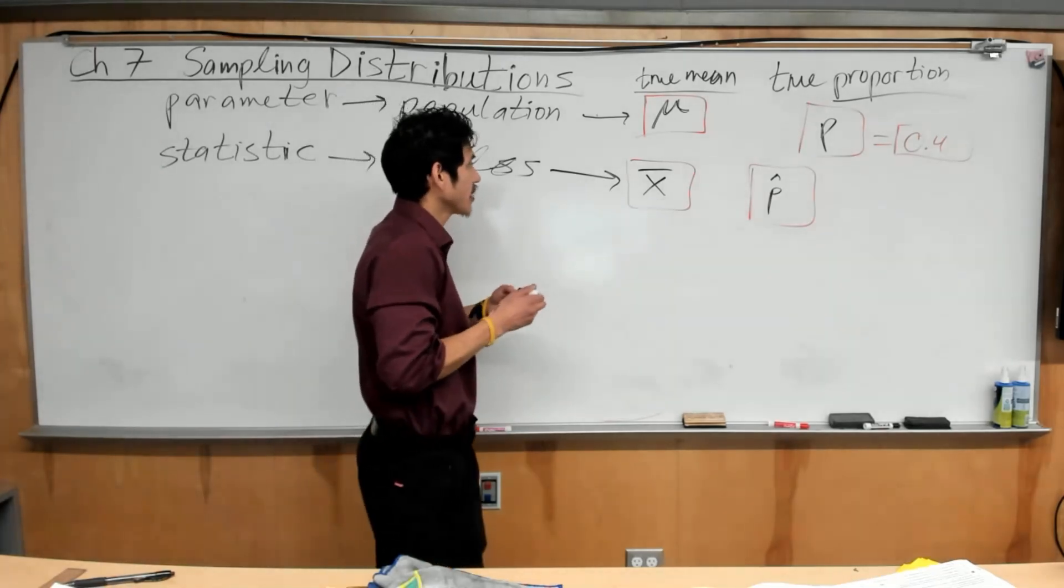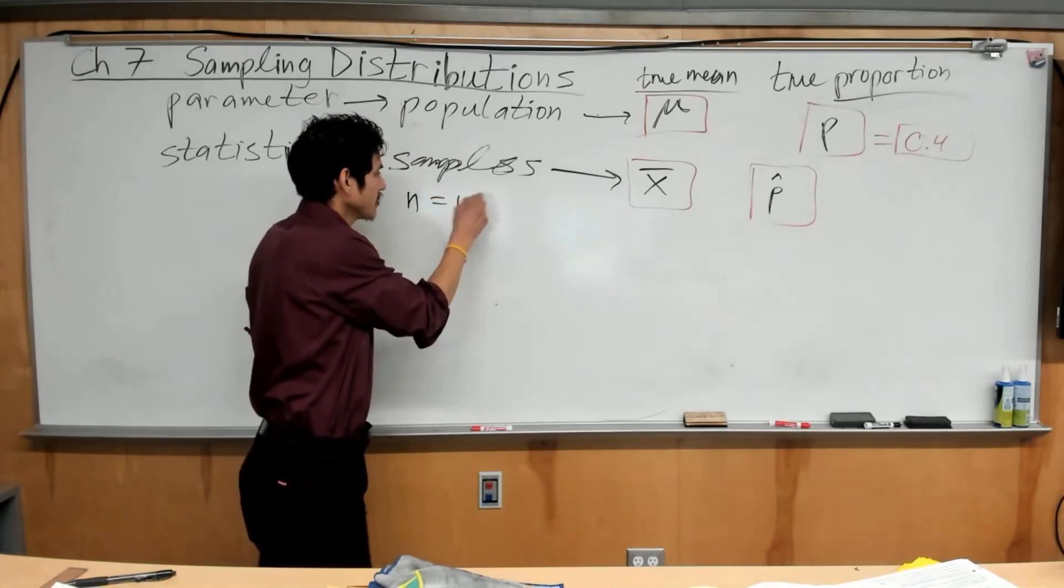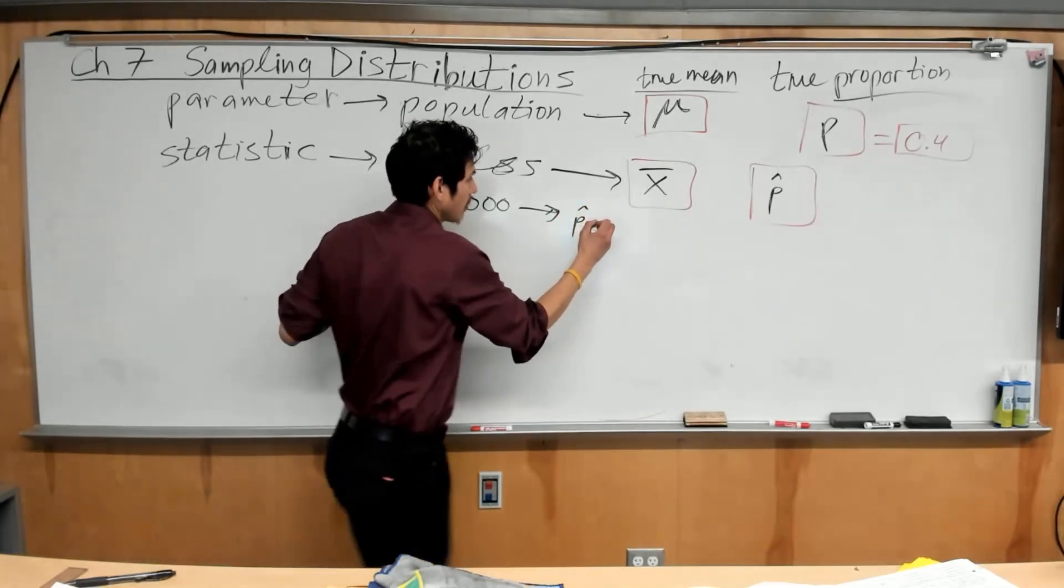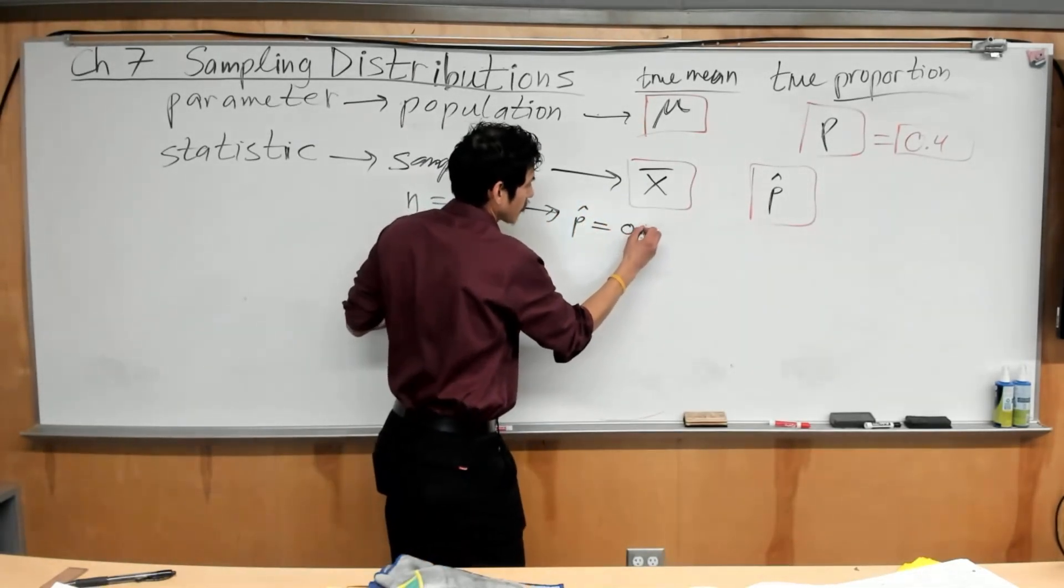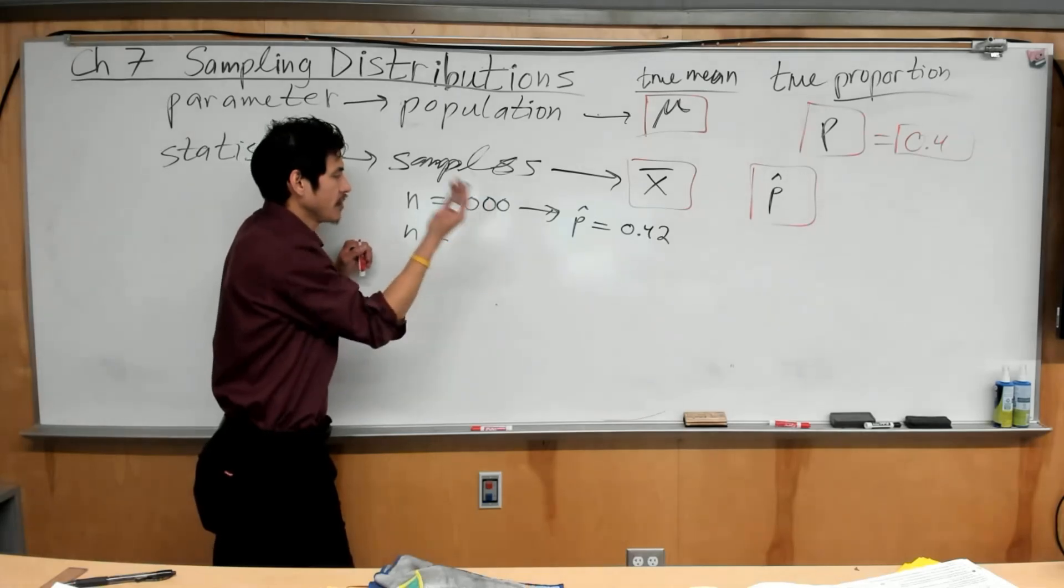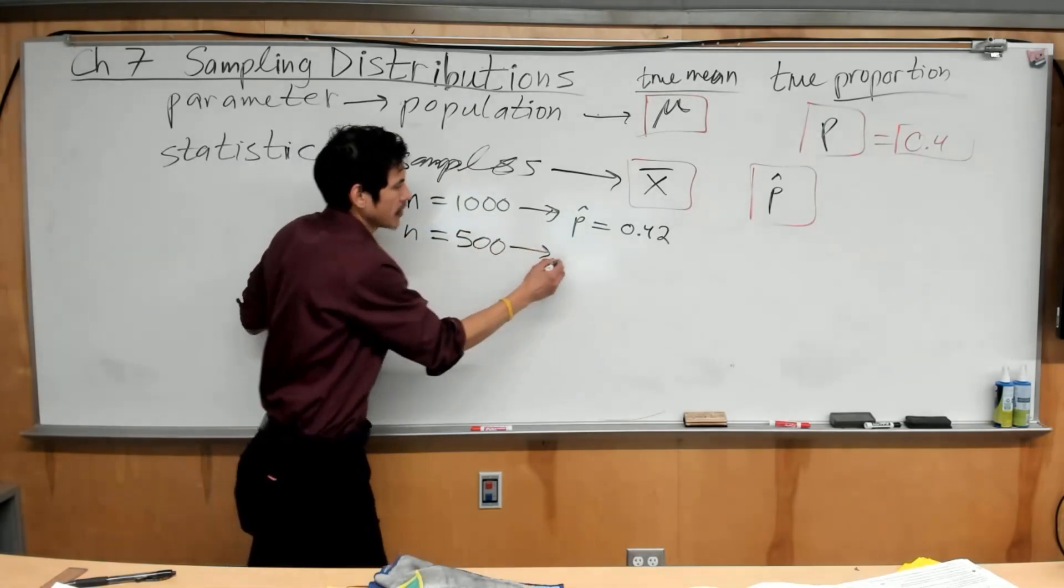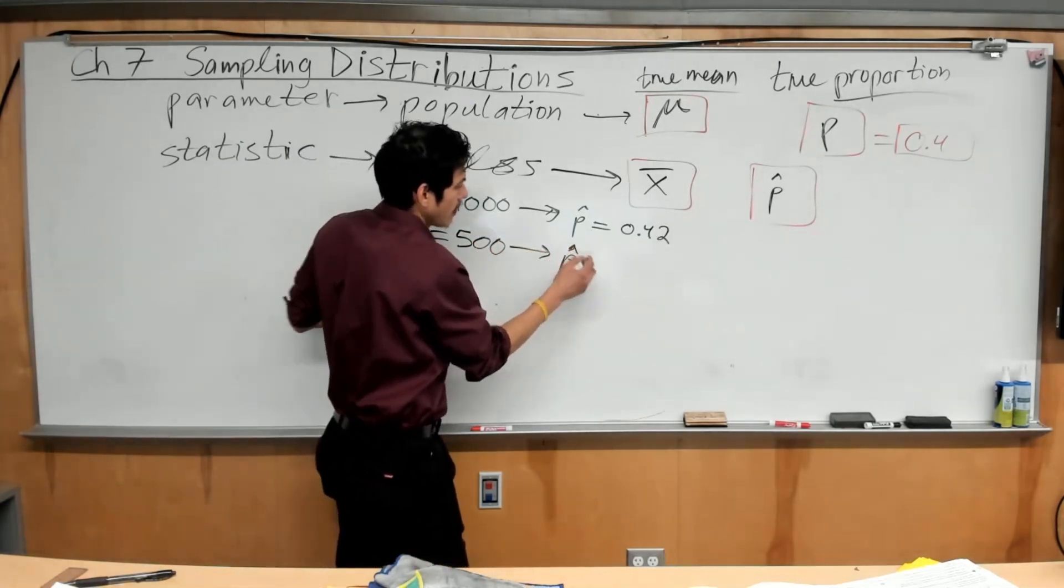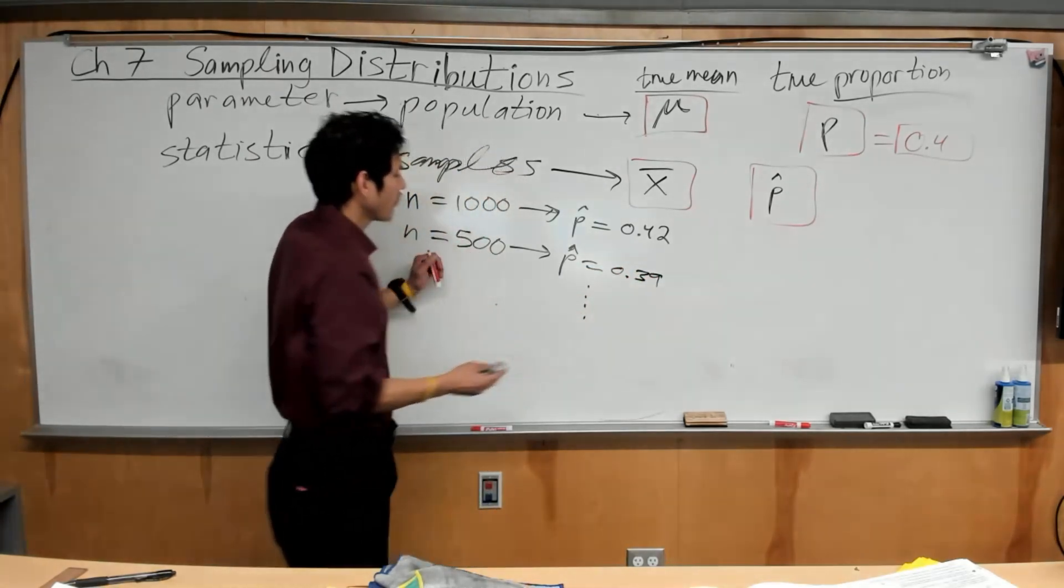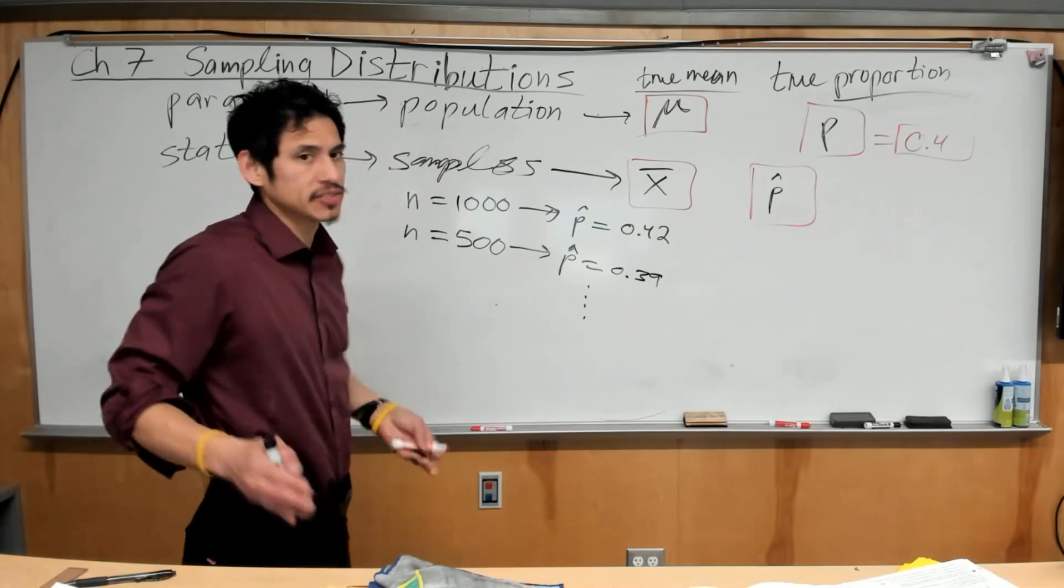So, if you take a group of, let's say, 1,000 students, N equals 1,000, maybe for this 1,000 students you get p-hat to be 0.42. And maybe you take a different sample, maybe across the country of another 500 students, and you get p-hat to be like 0.39, and so forth. It depends on the sample size and depends on the group.